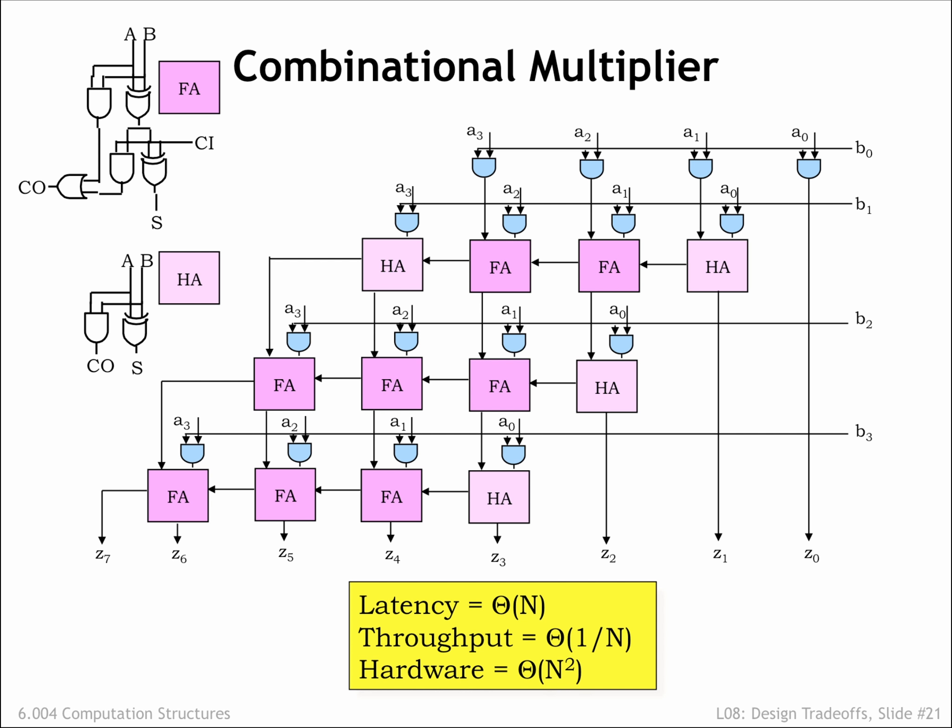In the next section we'll investigate how to reduce the hardware costs, or separately how to increase the throughput. But before we do that, let's take a moment to see how the circuit would change if the operands were 2's complement integers instead of unsigned integers.